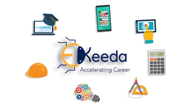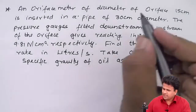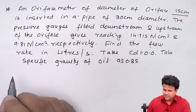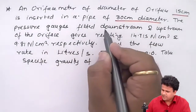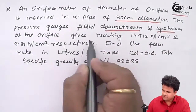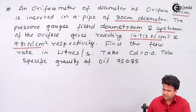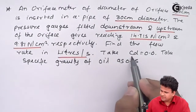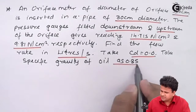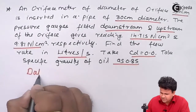We have an orifice meter having orifice diameter of 15 centimeters inserted in a pipe of 30 centimeters. The pressure gauges fitted downstream and upstream of the orifice read 14.71 and 9.81 respectively. Find the flow rate in liters per second. Cd equals 0.6 and the specific gravity of oil is 0.85.